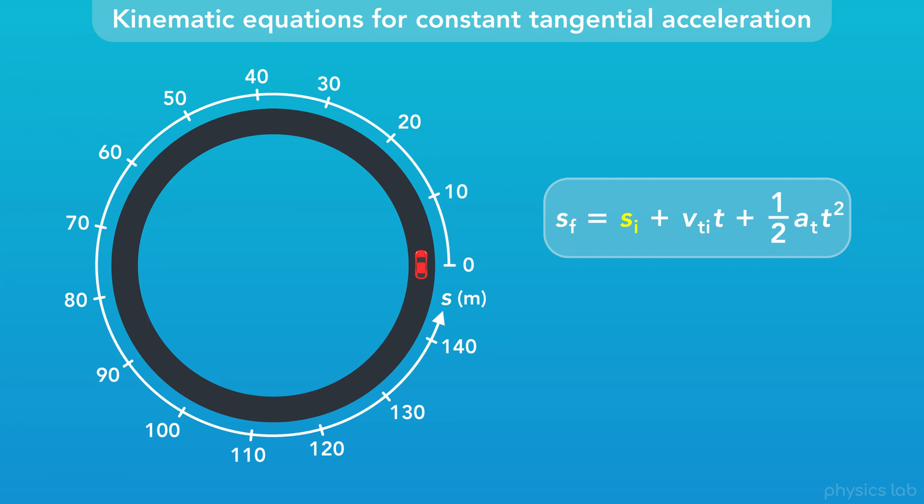times time plus one half times the tangential acceleration multiplied by the time squared. This is useful for things like finding the position of an object in circular motion after it accelerates for a given period of time.